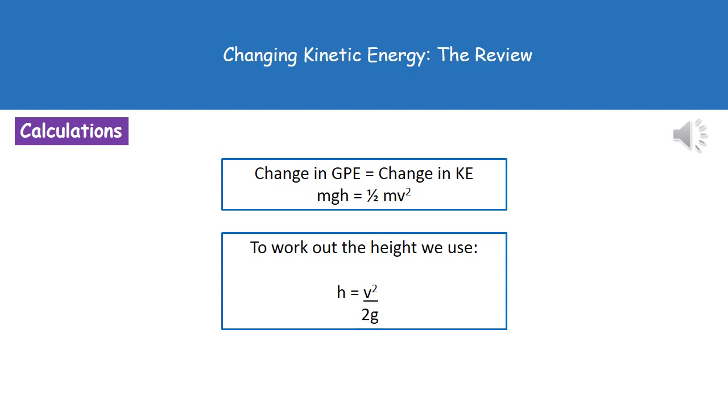So that tells us that height equals our velocity squared divided by 2 times the gravitational field strength. Now, obviously we know that gravitational field strength on Earth is 10. So it's basically going to be height equals your velocity squared divided by 20.